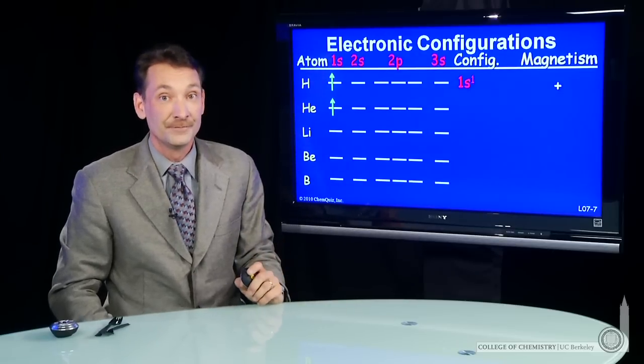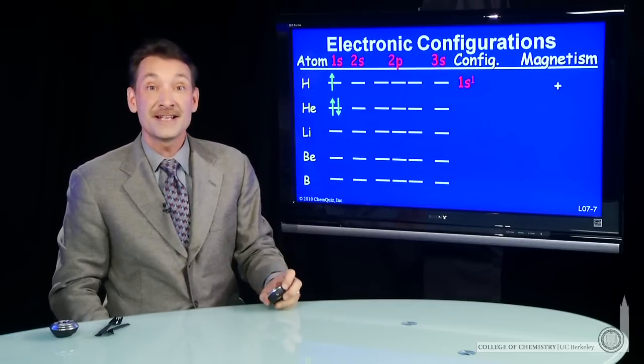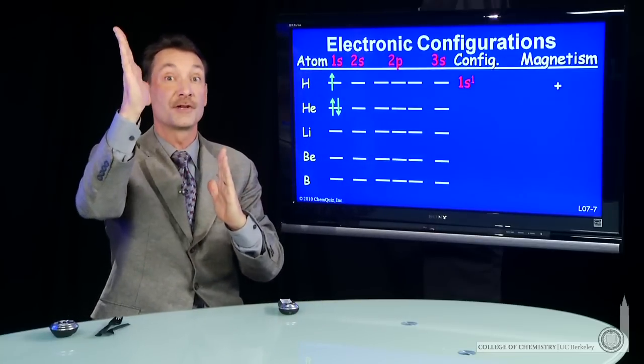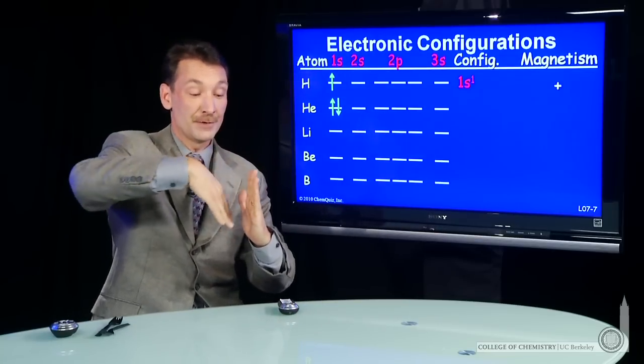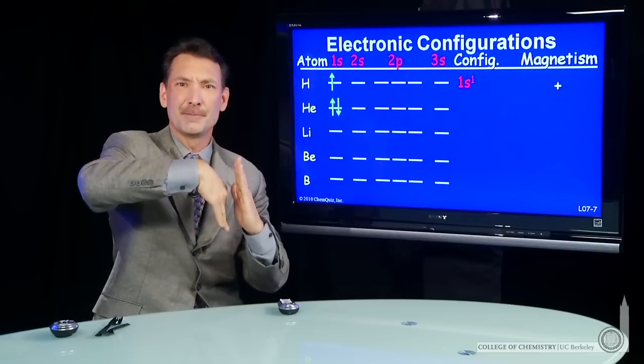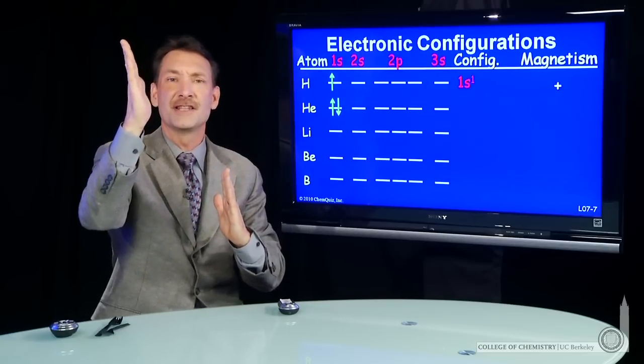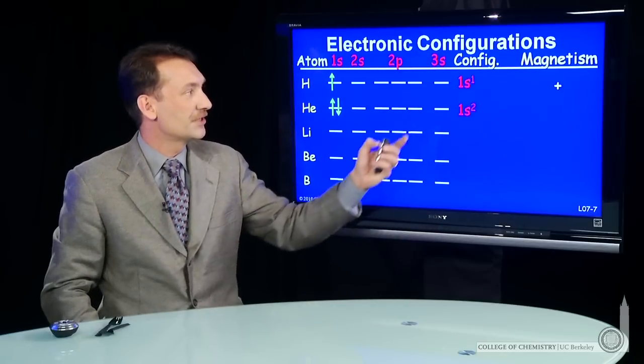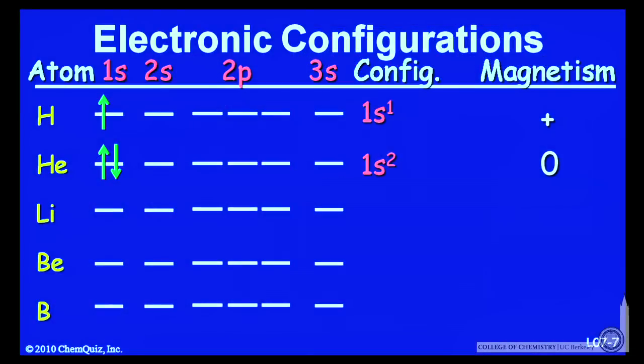Helium has paired electrons because the next electron will go in the 1s orbital paired up. The 2s orbital is higher in energy, so it's cheaper to spend that little energy to pair than to put the energy in the higher 2s orbital. So helium will have the electronic configuration 1s2 and not be magnetic.